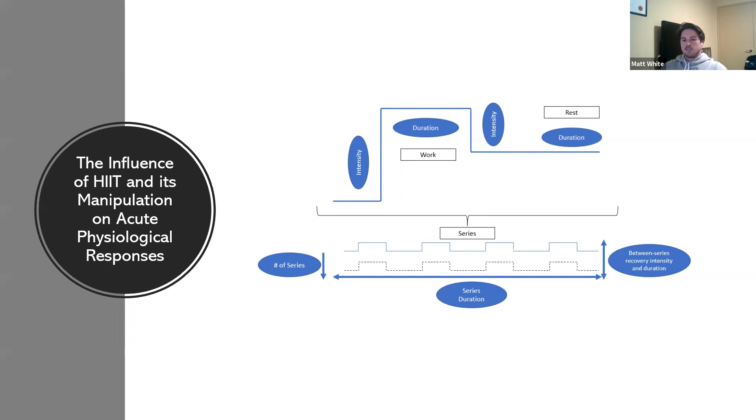Usually the common variable everyone manipulates is work interval duration and intensity, and the rest interval as well. For example, we always look at using 30 seconds on, 30 seconds off, or a 30-20, 20-40, something like that. We always use passive recoveries or walking as a low-intensity exercise.